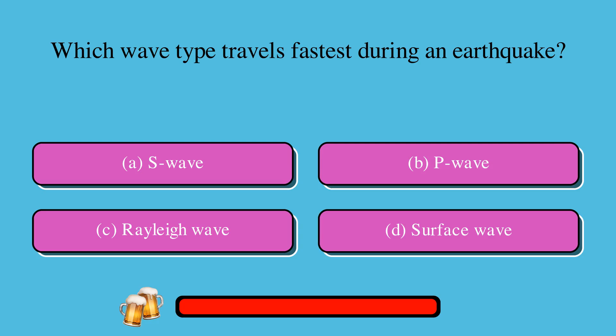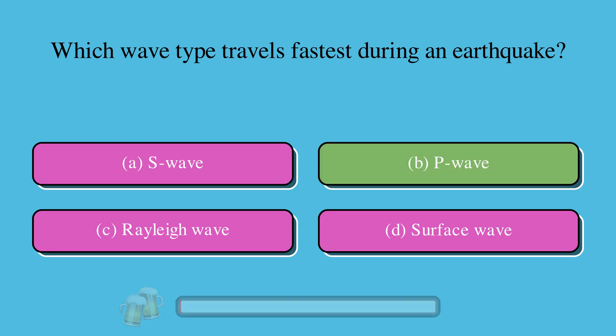Which wave type travels fastest during an earthquake? A. S wave, or B. P wave, or C. Rayleigh wave, or D. Surface wave? The correct answer is B. P wave.